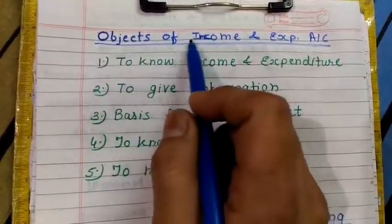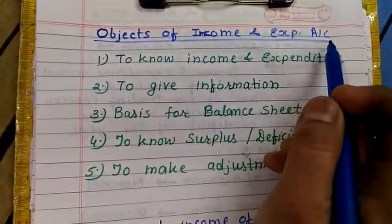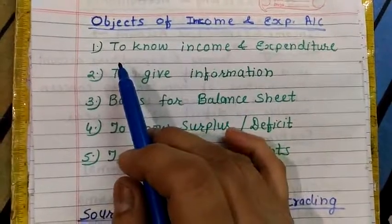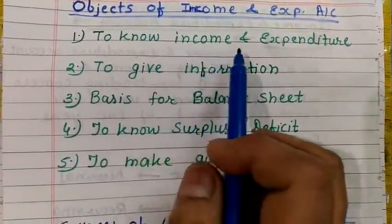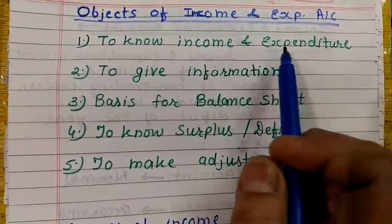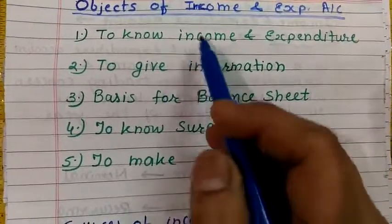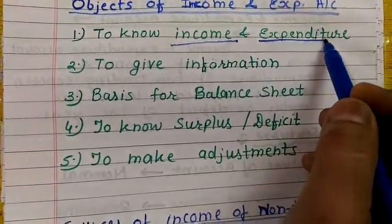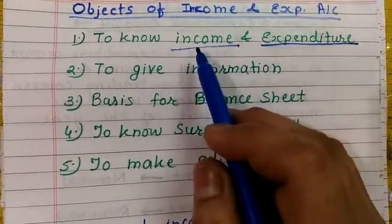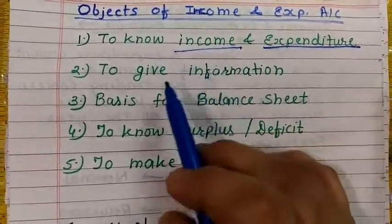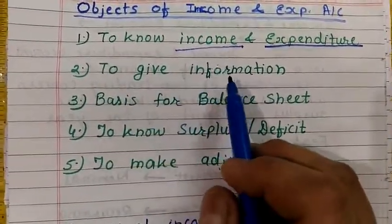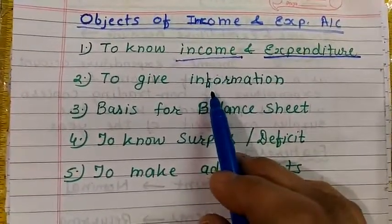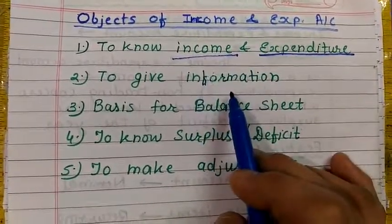Now let us know what are the objects of the Income and Expenditure Account — the purposes for which this account is prepared. First, this account is prepared to know the income and expenditure of any non-trading institution, showing what is the total income of the year and what are the different yearly expenditures recorded in total form. It is also prepared to give information to members about how the institution is working, how the income is used, and how expenditures are made.